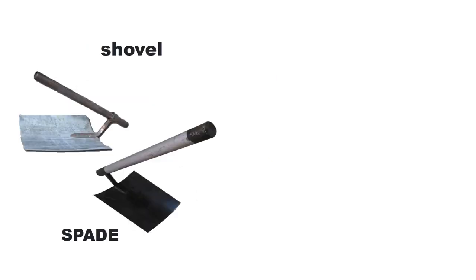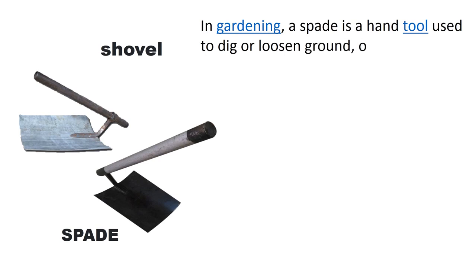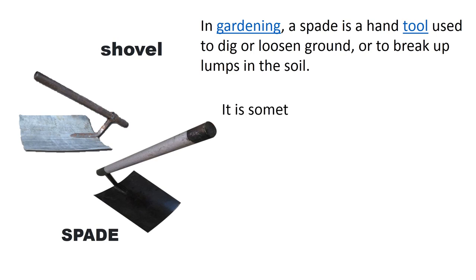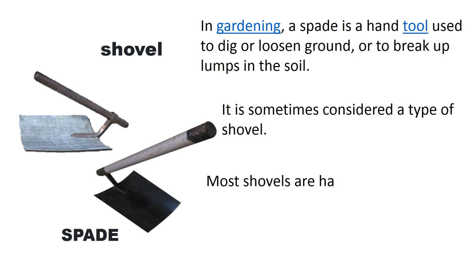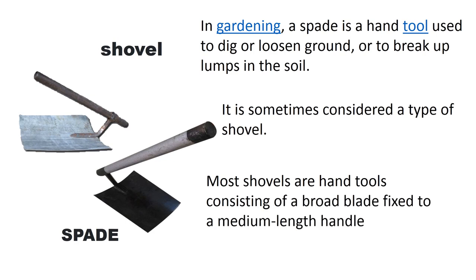The next tool is the spade. In gardening, a spade is a hand tool used to dig or loosen ground, or to break up lumps in the soil. It is sometimes considered a type of hoe also. Most hoes are hand tools consisting of a broad blade fixed to a medium-length handle.